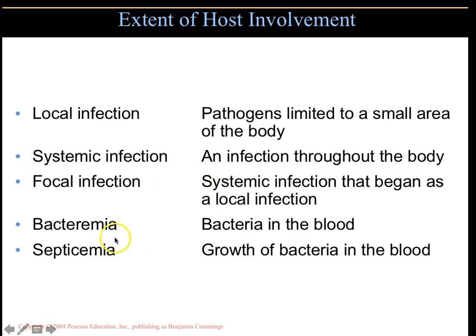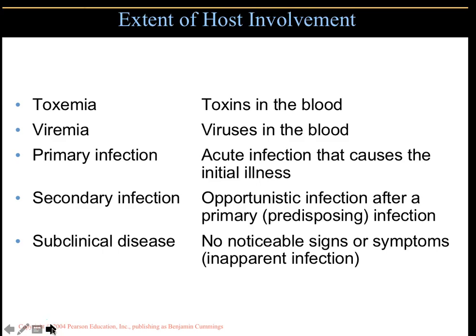A wound in the leg can be a focal infection that becomes systemic and causes septicemia. Bacteremia is finding bacteria in the blood; septicemia means bacteria are actively growing in the blood, which can be quickly deadly. Toxemia is toxins in the blood; viremia is viruses in the blood. Primary infection is the original pathogen that started it all; secondary infection is what arises because of the primary — for example, the flu can lead to pneumonia as a secondary infection. Subclinical means there are no noticeable signs or symptoms yet.